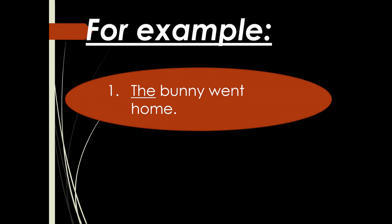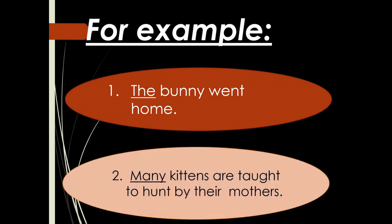For example, 'the bunny went home' — here 'bunny' is a noun and 'the' is a determiner, that is why 'the' is used before the word 'bunny'. Next example: 'many kittens are taught to hunt by their mothers' — here 'kittens' is a noun and 'many' is a determiner, used before the word 'kittens'.